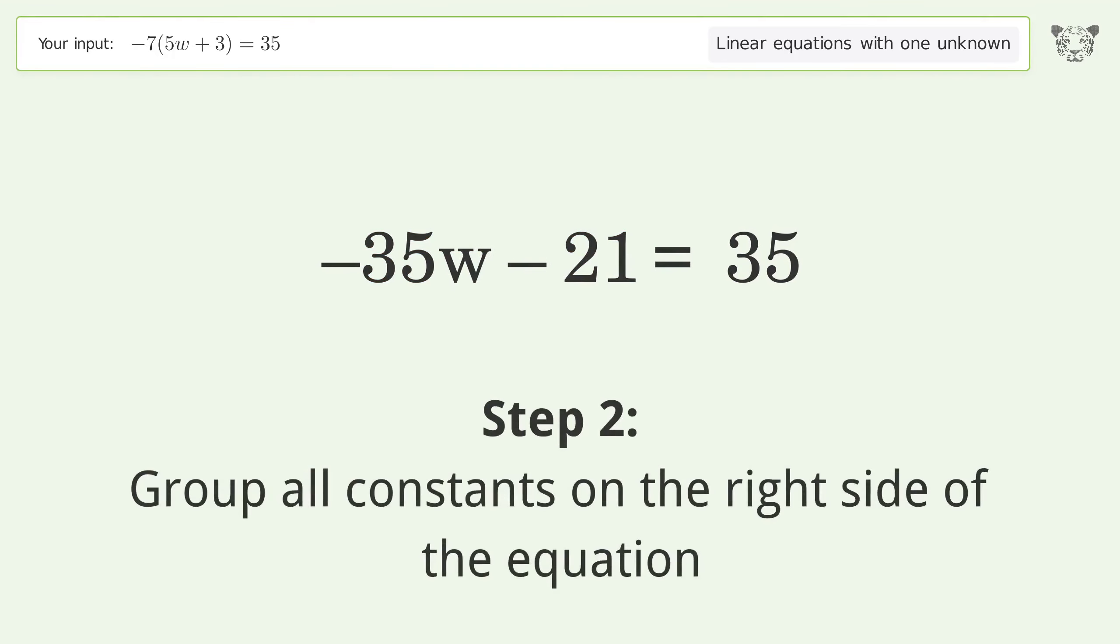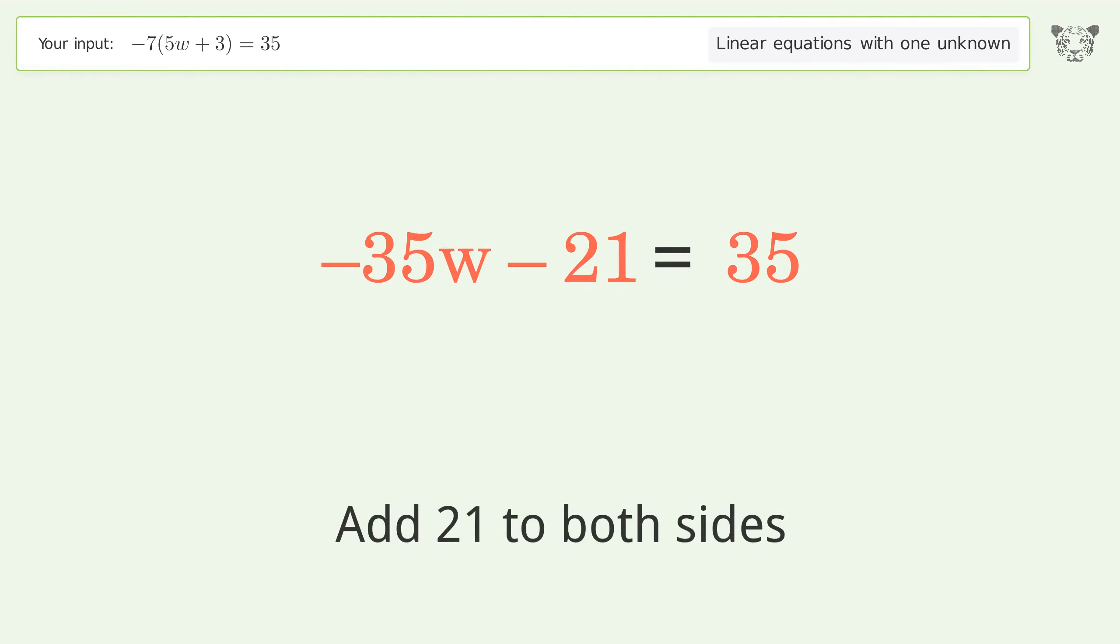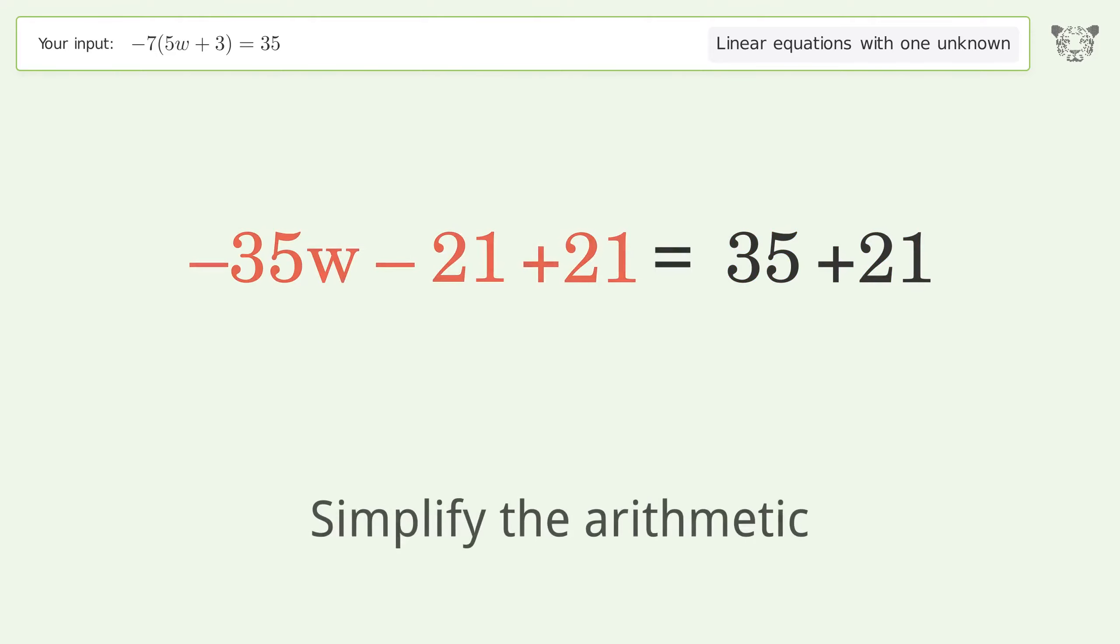Group all constants on the right side of the equation. Add 21 to both sides. Simplify the arithmetic.